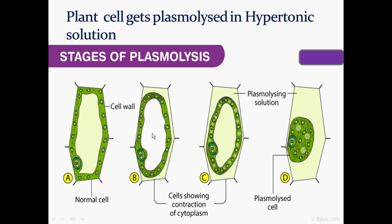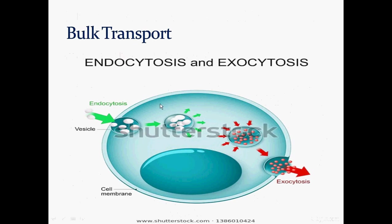The cytoplasm is contracting — as you know, the plasma membrane is elastic. In the further diagrams in C and D you can see that it has entirely shrinked. The plasma membrane is entirely shrinked and totally detached from the cell wall. So this is a plasmolyzing solution — we can call it a plasmolyzing solution because it has detached the plasma membrane from the cell wall. Thank you students, in the next video I will explain about bulk transport.